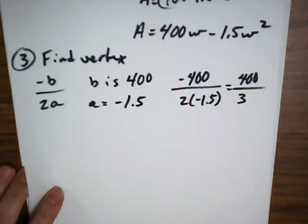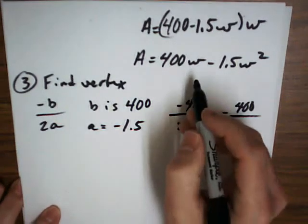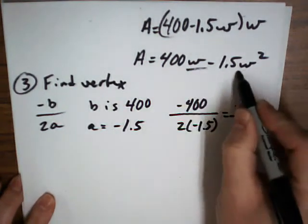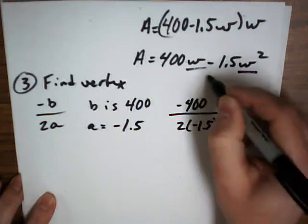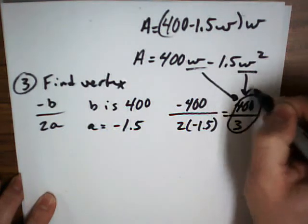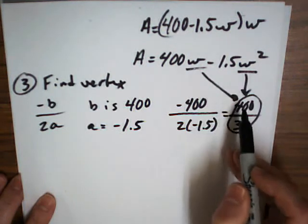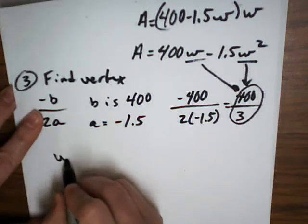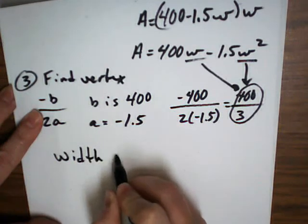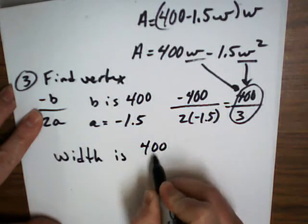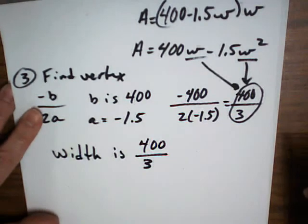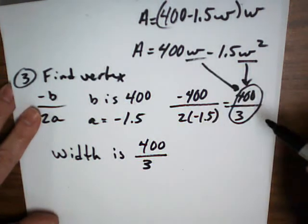400 divided by 3? 400 thirds? Now, if this is W right here, then this is W. If you solve, if you have a variable that's W's here, then this is the W. It does matter. The width is 400 thirds. It matters. If this is W, then that's W.